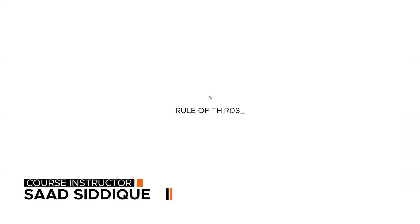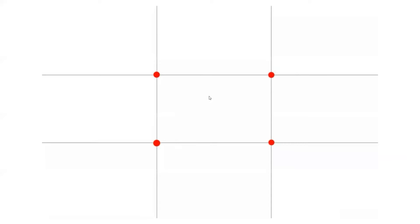It is called Rule of Thirds. Rule of Thirds is a graphic design concept. It is related to visual composition or discipline, like photography, painting, anything. Rule of Thirds is very important.